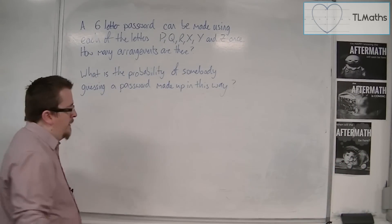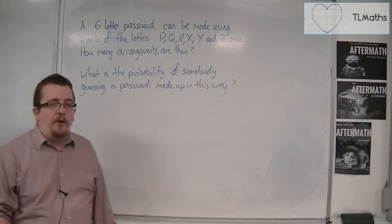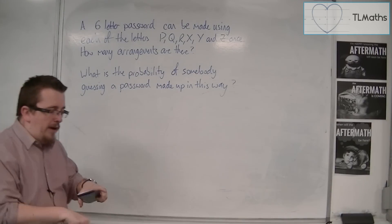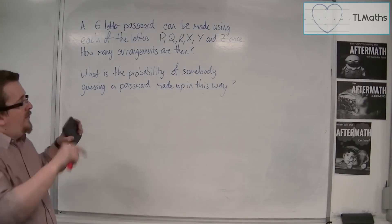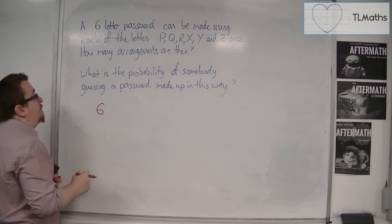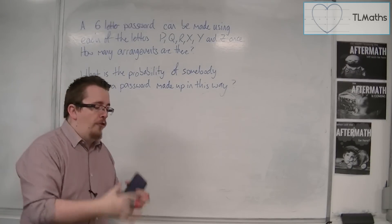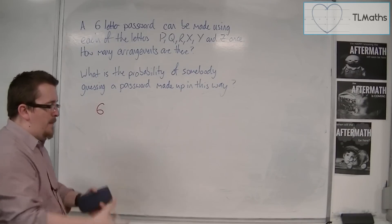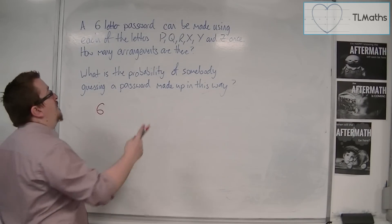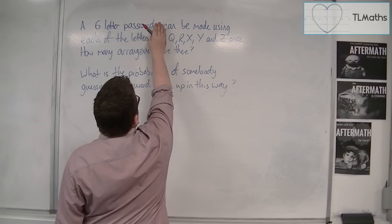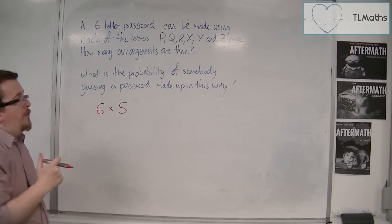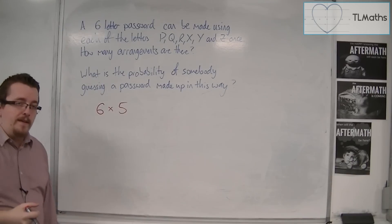If we've got six choices to start off with, because if I'm going to type in my new password, I've got six letters to choose from. So I've got six choices. And then for each of those afterwards, once the first letter's been put in, I've got five choices left. So if I've put in P, I've got five choices left, and that means there are 20 different combinations in that case.